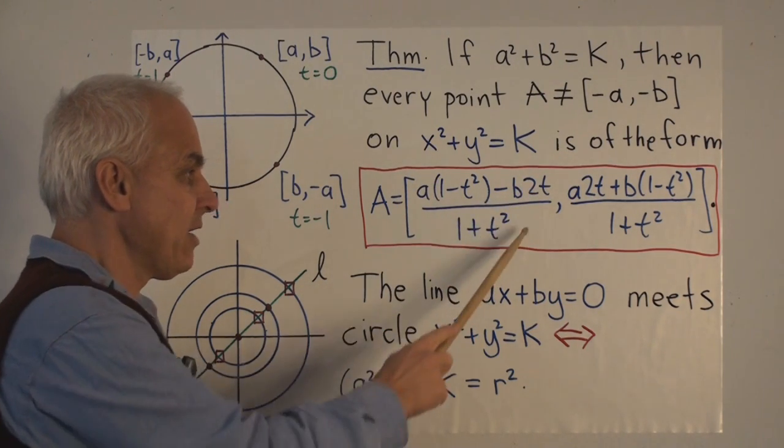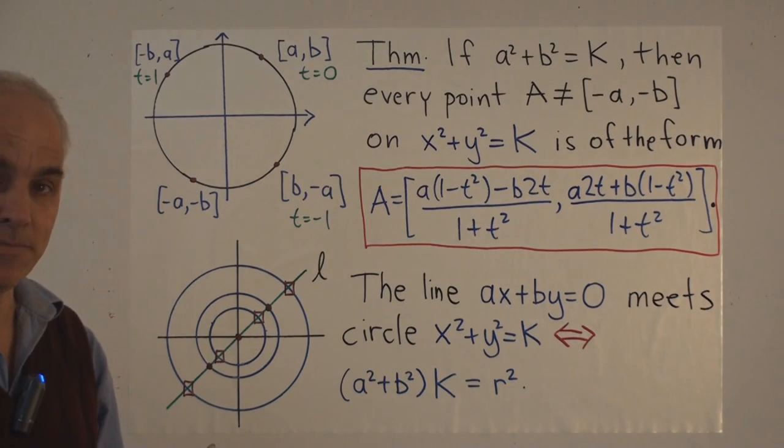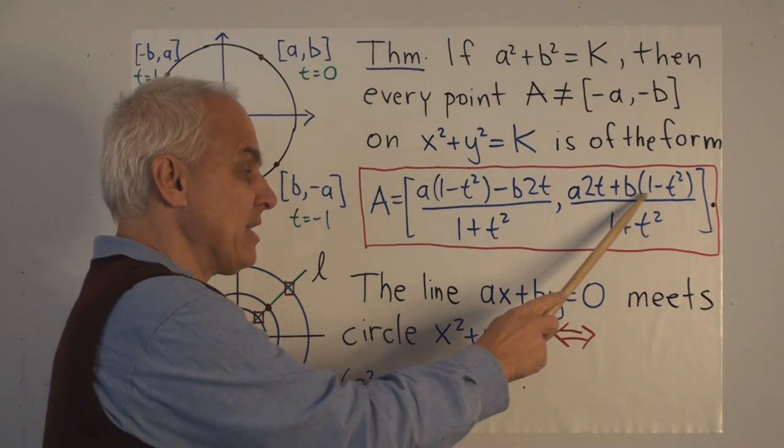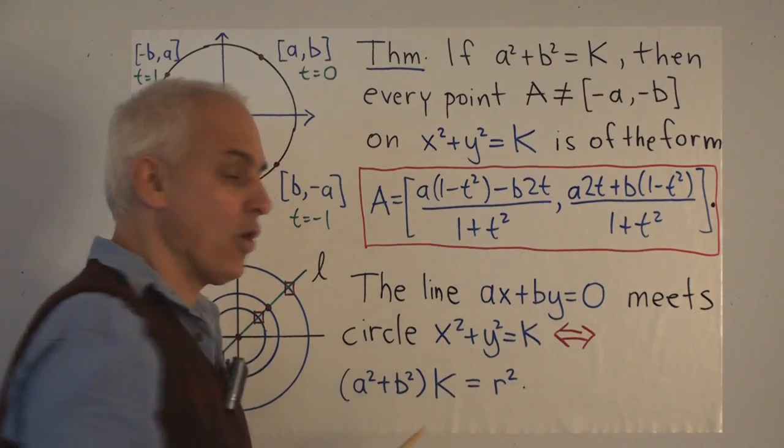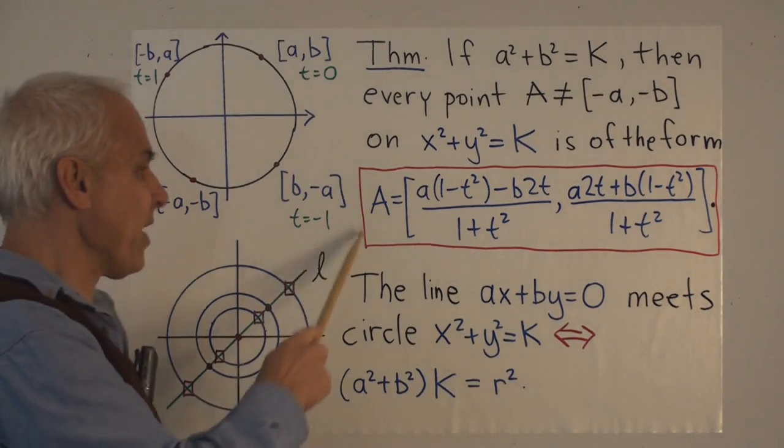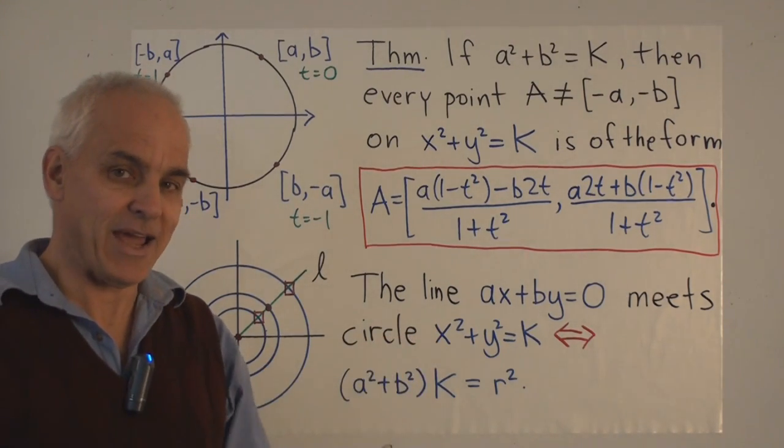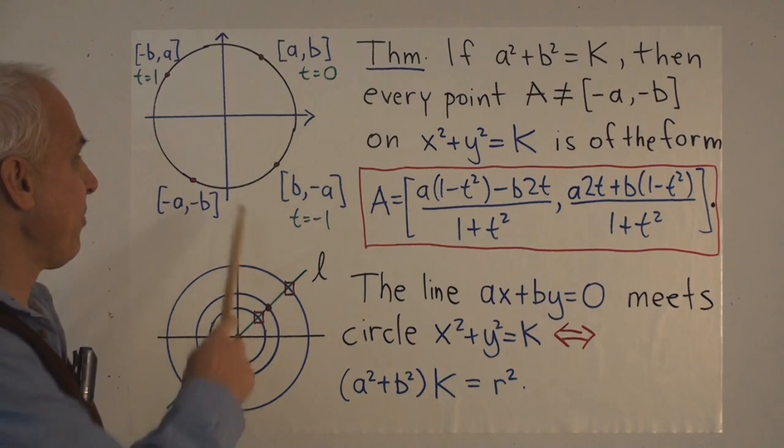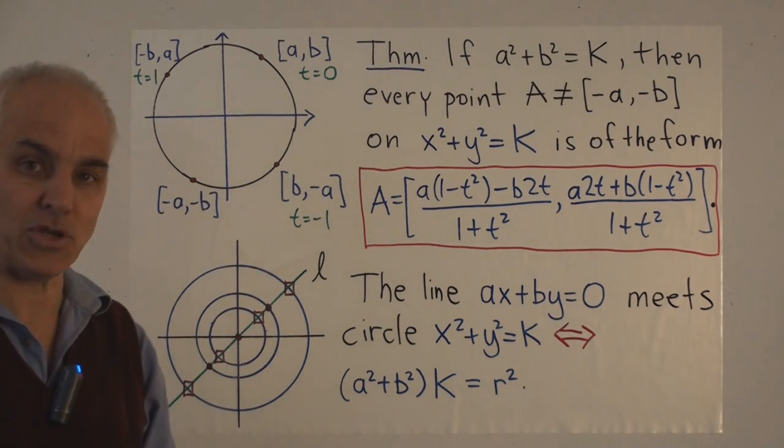x-coordinate: [a(1-t²) - b(2t)]/(1+t²), and y-coordinate: [a(2t) + b(1-t²)]/(1+t²). So that's a theorem that follows in a similar way as does the previous one. It gives a complete parametrization of a general circle.